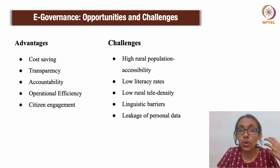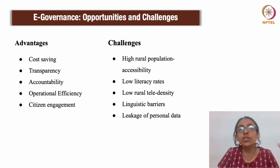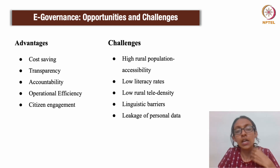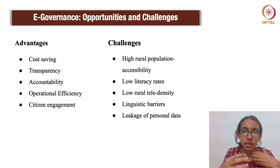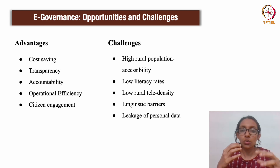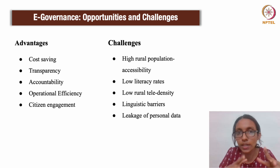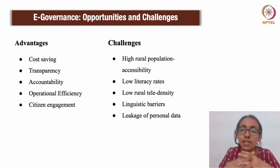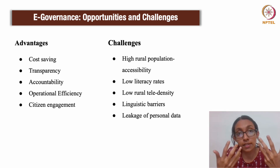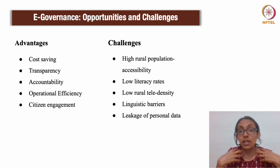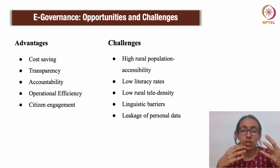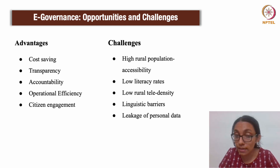Secondly, there are low literacy rates in most parts of our country, which makes it difficult for people to navigate through e-governance on their own. They might need the help of other people. Maybe the government officers themselves will have to assist illiterate people in how to go about accessing these services through technology, which might make the whole system seem redundant. Language may also be a significant barrier — many people may not be able to understand the system if services are offered in English or in a regional language that is not their own.